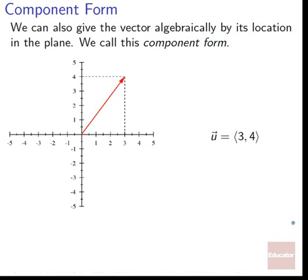We can also give the vector algebraically by its location in the plane using rectangular coordinates — we call this the component form. So we've got a horizontal amount of three and a vertical amount of four, so we say its horizontal component is three and its vertical component is four. The vector U equals ⟨3, 4⟩. The first component is the horizontal one, the second component is the vertical, just like when talking about points in the plane.